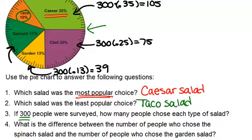For spinach, you do 300 times 0.17, and you get 51 people. And then finally, for taco, we need 300 times 0.1, 10 percent, and we would get 30.